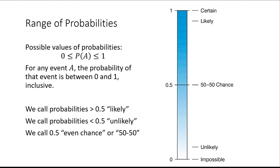When we're calculating probabilities, all of your answers will be between 0 and 1, which is kind of nice — if you get a negative number or something bigger than 1, you know there's a mistake somewhere. If the probability is equal to 0, it means it's impossible. If the probability is at 1, that means it's guaranteed to happen. At 0.5, there's a 50-50 chance it could go either way. The closer you are to 0, the less likely the event is to occur; the closer to 1, the more likely.